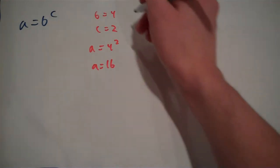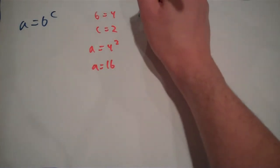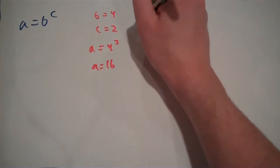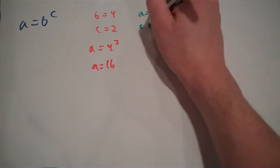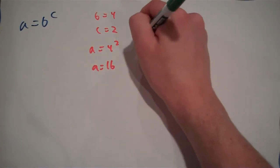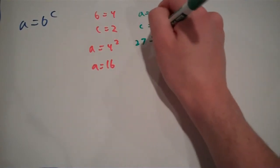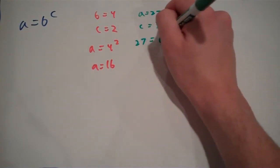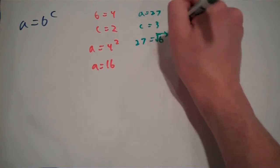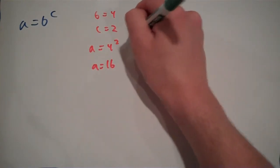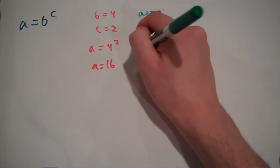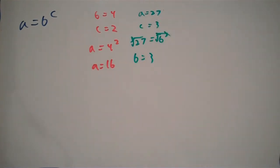Or let's say that a equals 27 and c equals 3. We can figure out the value of b by taking the cube root, and that will tell us that b is 3.